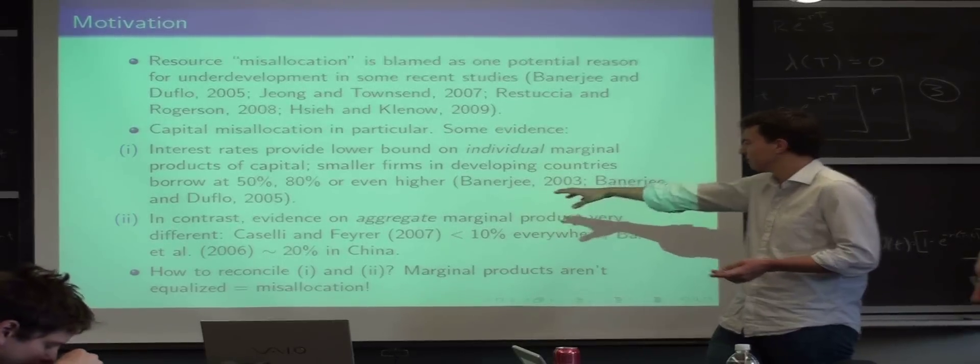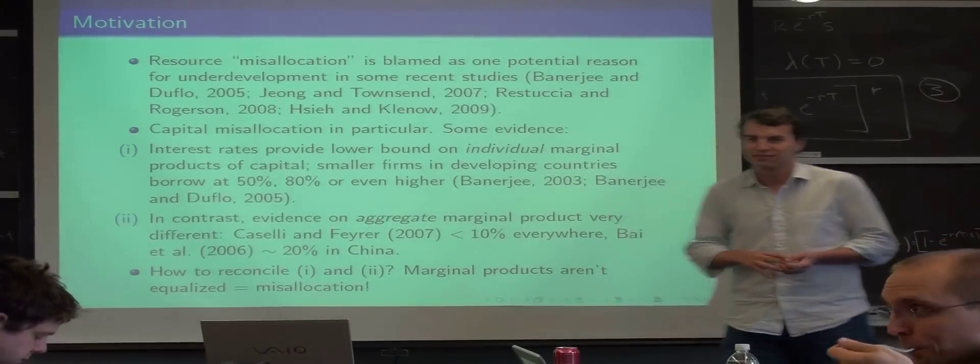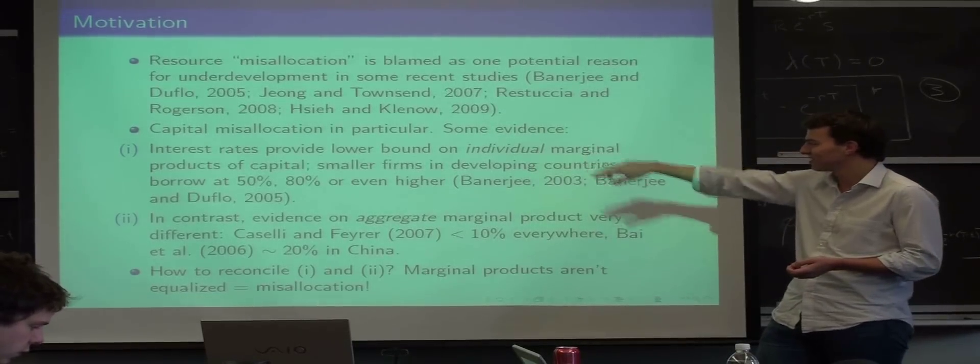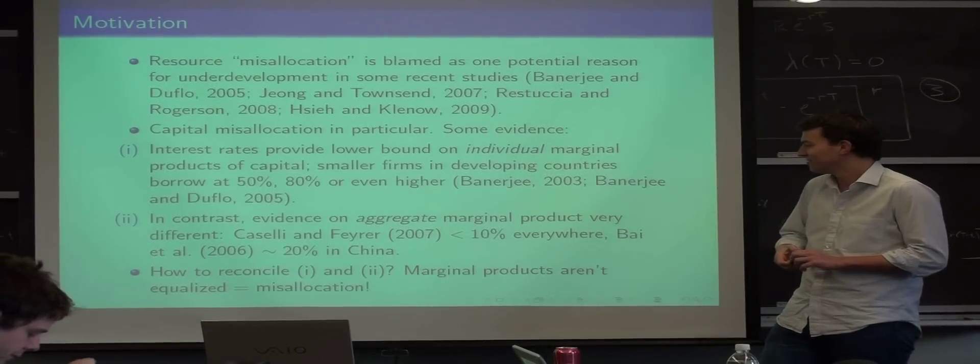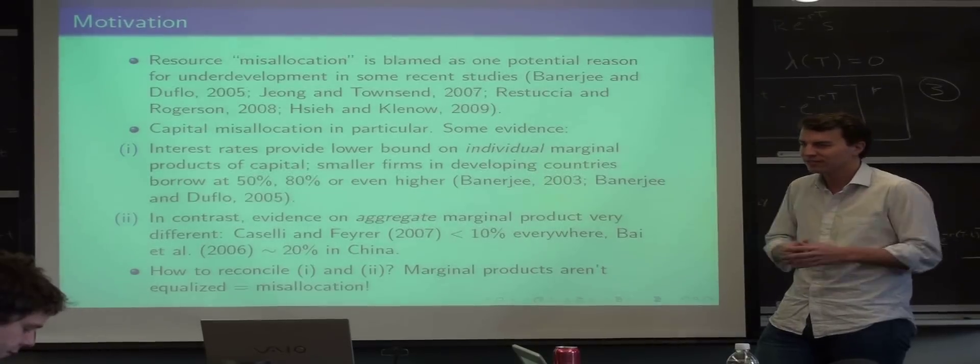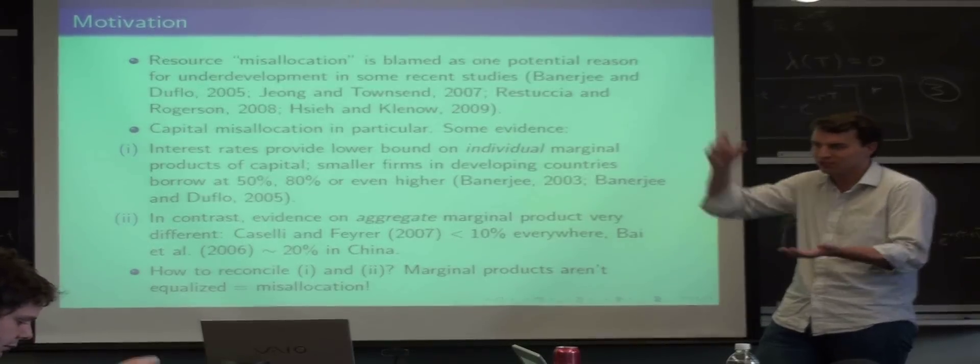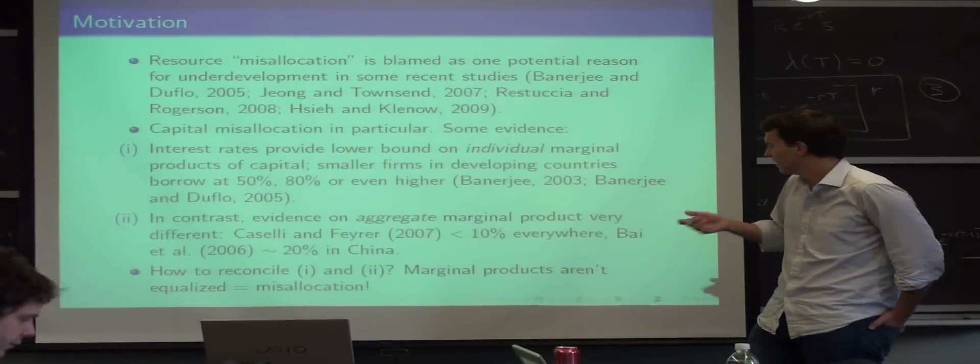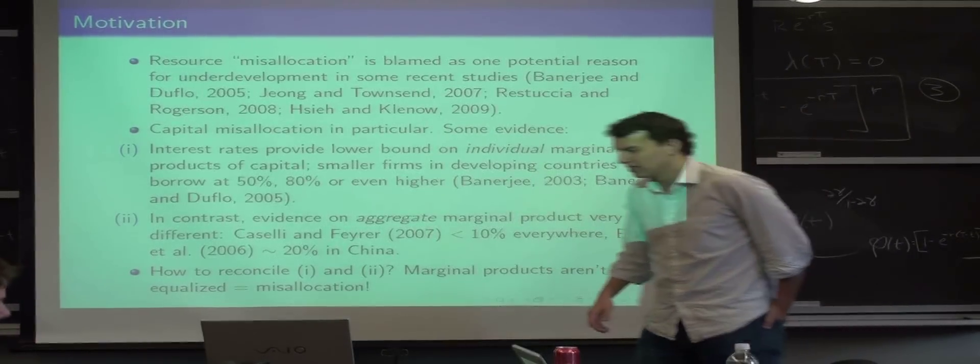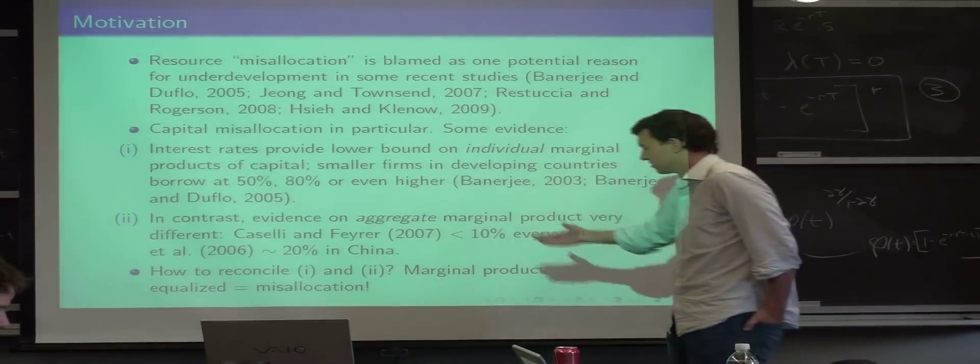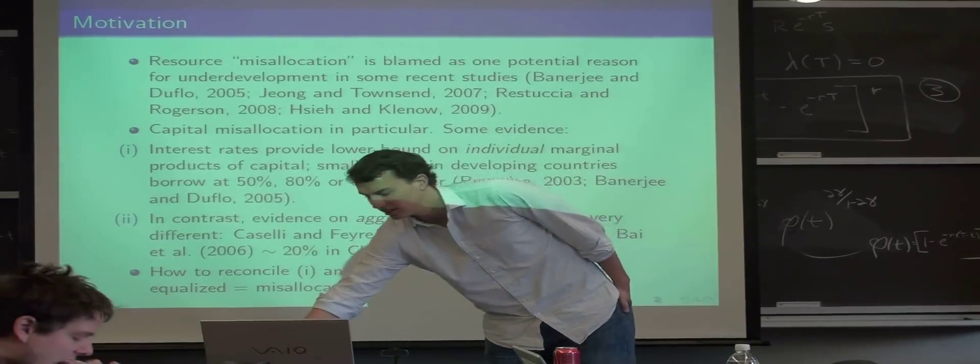Okay, given that you actually believe me that this is a good estimate of the aggregate marginal product of capital, how do you reconcile those two? The pretty obvious answer is that the aggregate, like the average, is very different from individual ones, so it just means that they can't be equalized within the country. And the definition of misallocation is that marginal products are not equalized, so that means there is misallocation.